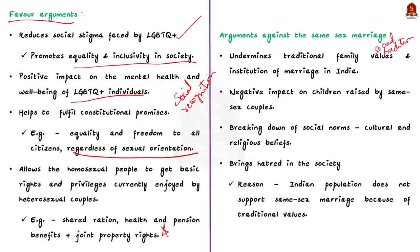Secondly, same-sex marriage would have a negative impact on children adopted and raised by same-sex couples. Some opponents argue that children need both a mother and a father for a well-rounded upbringing, and children of same-sex couples are more likely to have emotional and behavioral problems. Thirdly, same-sex marriage would lead to a breakdown of social norms, eroding India's cultural and religious traditions.